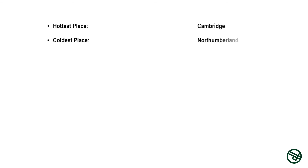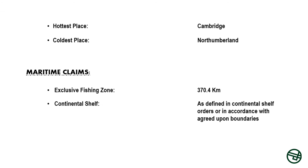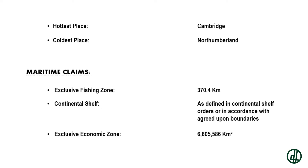Hottest place: Cambridge. Coldest place: Northumberland. Maritime claims — exclusive fishing zone: 370.4 kilometers. Continental shelf: as defined in continental shelf orders or in accordance with agreed upon boundaries. Exclusive economic zone: 6,805,586 square kilometers. Territorial sea: 22.22 kilometers.